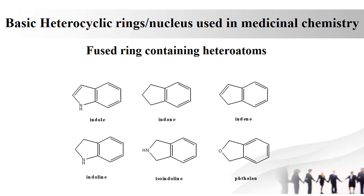Next one is indene. In indene, a benzene ring is fused with cyclopentane. The drug sulindac contains indene. Additionally, the drug phenindione also contains the indene ring.